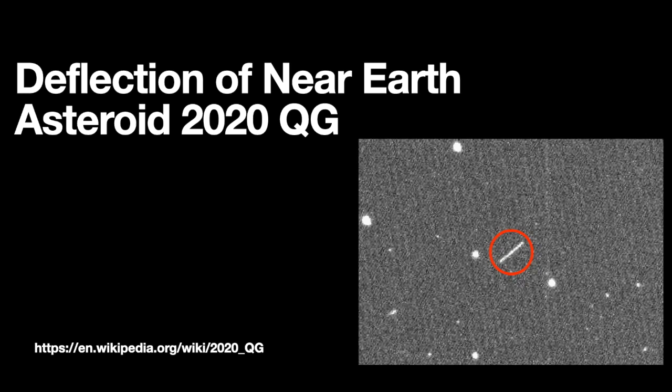In this video, I'm going to show you how to model the motion of asteroid 2020QG. Here you can see a picture of it as it passes near the Earth. This is a near-Earth asteroid, and we're going to use this as an example of using the Momentum Principle in Python to model and visualize the motion of this asteroid. Let's get started.